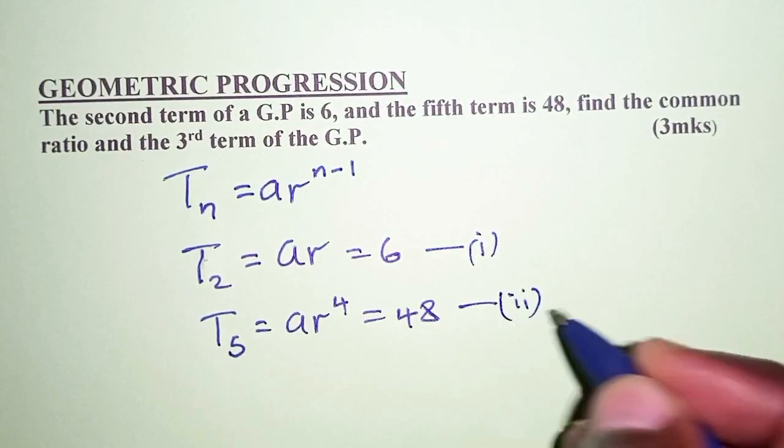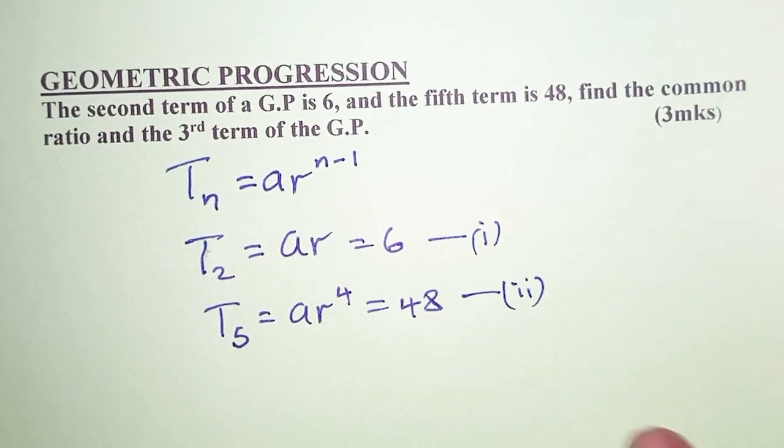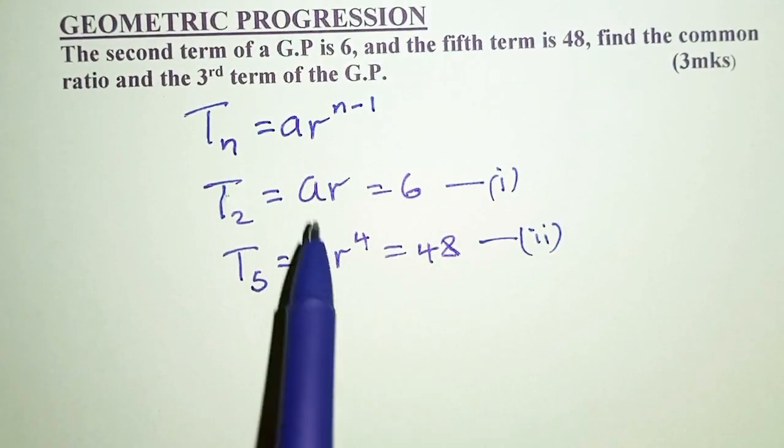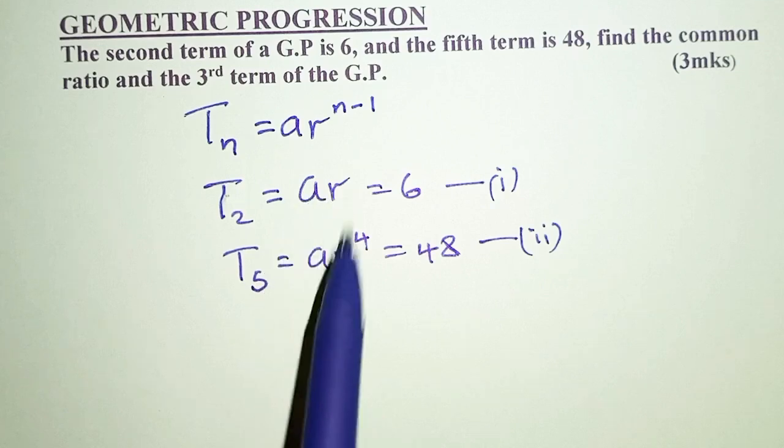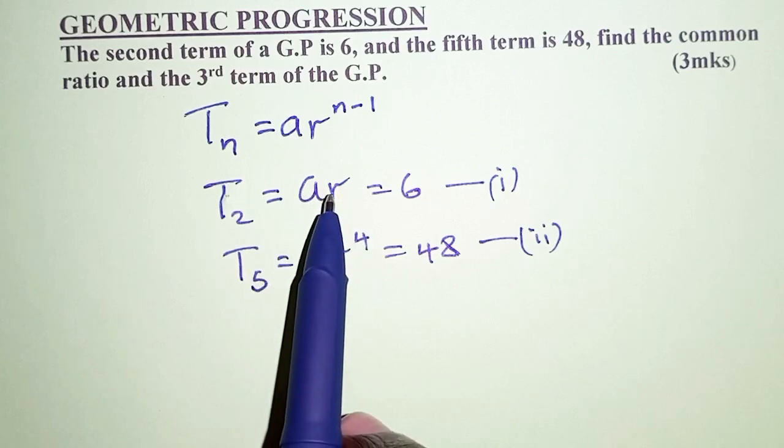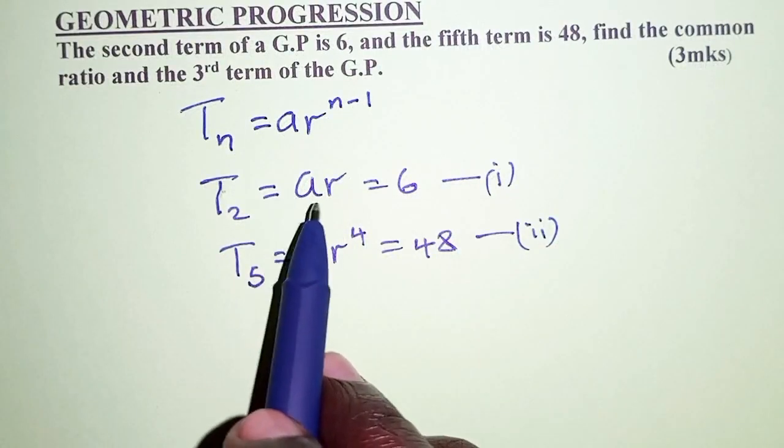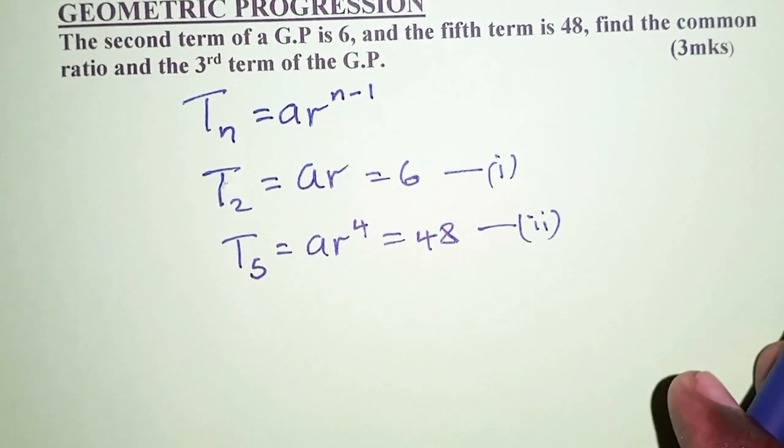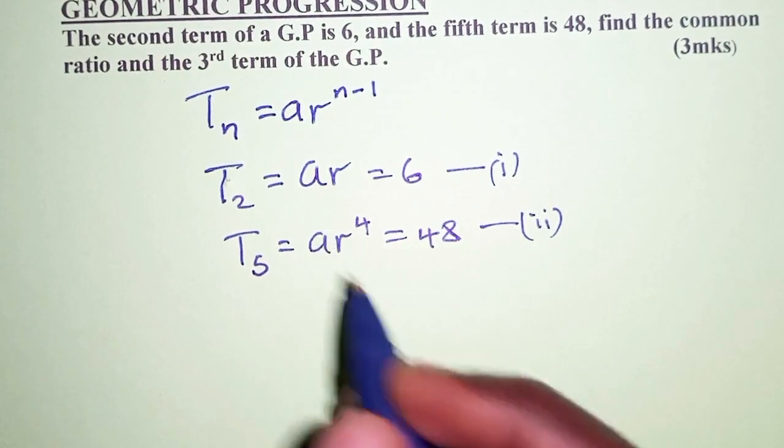So here we have two equations, equation 1 and equation 2, which we want to solve simultaneously. The trick here is to eliminate one of the unknowns. Remember we have two unknowns, a and r, to determine. a is the first term, r is the common ratio. First we are going to eliminate the first term and then determine the value of r.